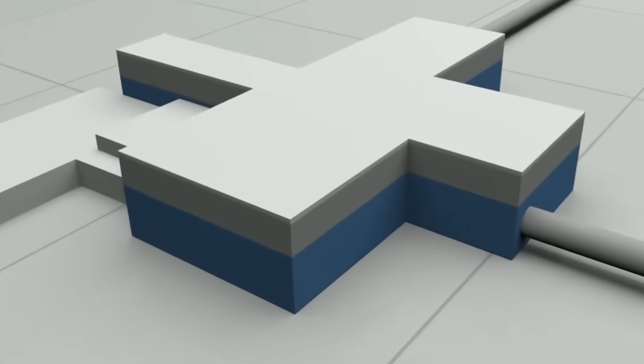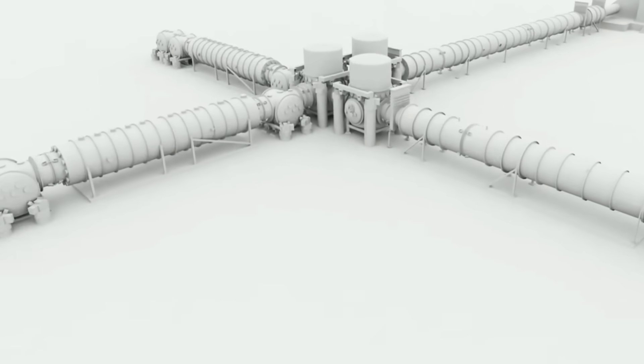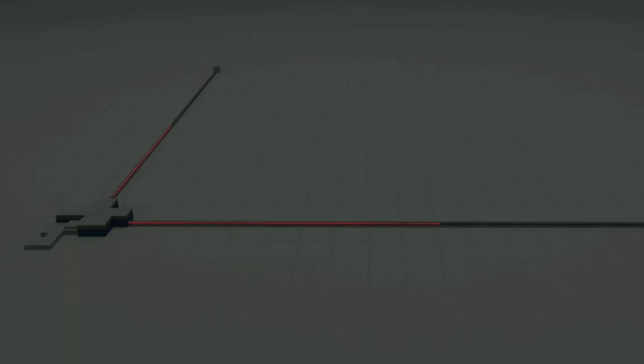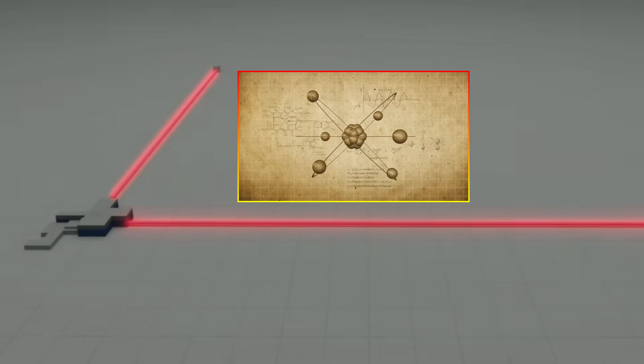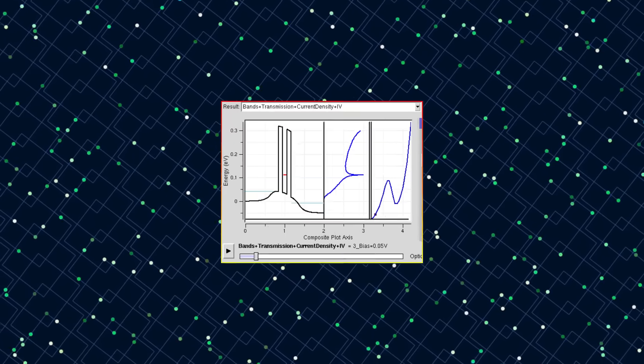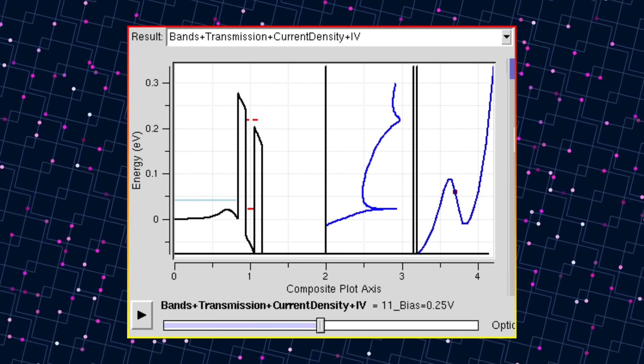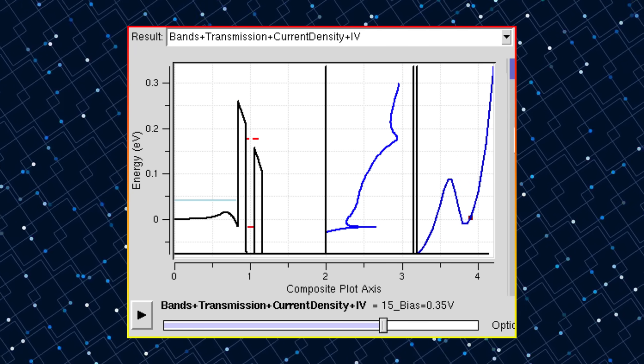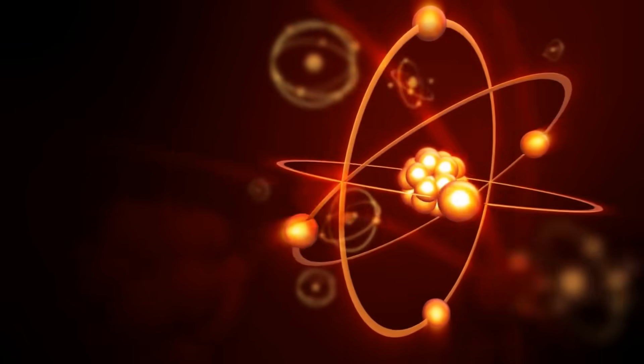The experiment revealed an anomalous energy signature that no one at CERN was prepared for. During the tunneling process, researchers detected what appeared to be a brief but measurable increase in energy, seemingly violating conservation laws that have been bedrock principles of physics for centuries. This unexpected energy fluctuation has some theoretical physicists proposing radical new interpretations of how energy functions at the quantum-classical boundary.